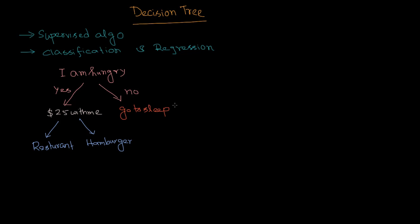We take those decisions based on our past experiences. In the decision tree algorithm, something similar occurs — we also take decisions, but mathematically. We'll see how to do that with a simplistic dataset. Now before we dive in, let's cover certain terms we should know about decision trees. The node from where we start dividing the whole dataset is called the root node.